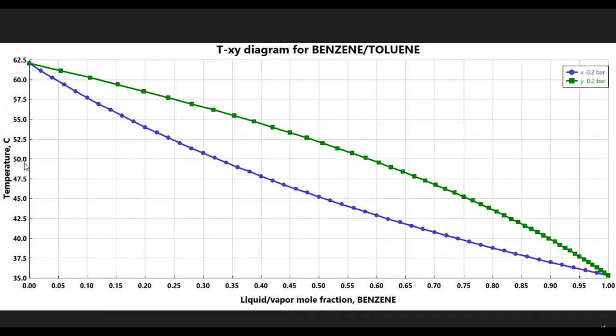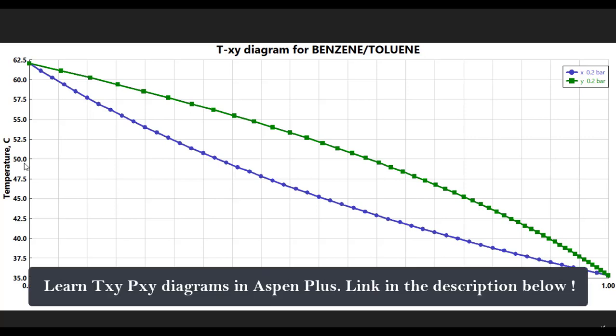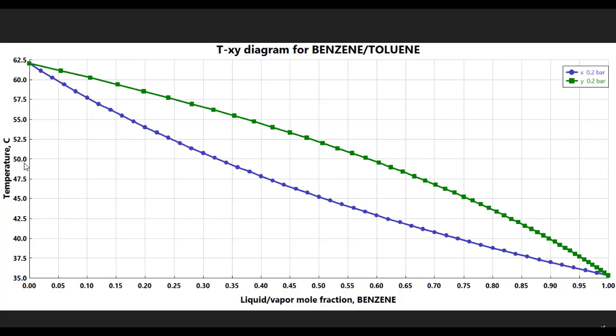If you want to create TXY and PXY diagrams for binary systems, don't forget to check out my videos on how to draw TXY and PXY diagrams in Aspen Plus. The link is in the description below and you can also check out the cards provided with this video. This means our system temperature should be between 47.5 and 50 degrees Celsius to get the desired vapor phase composition of benzene at 0.65.